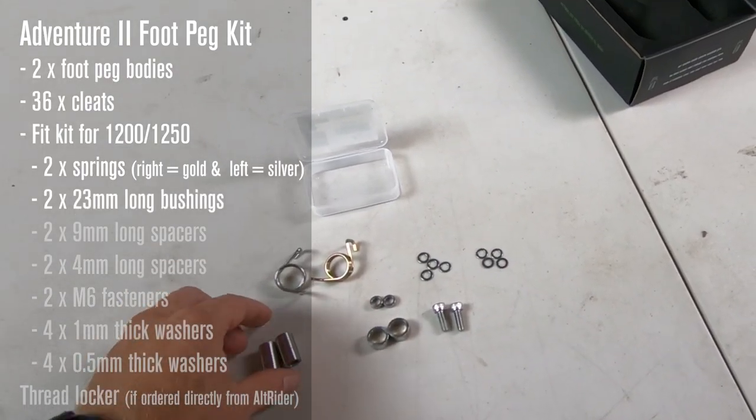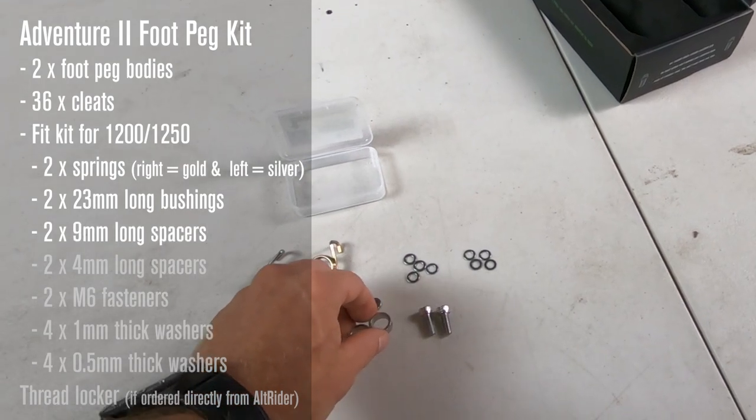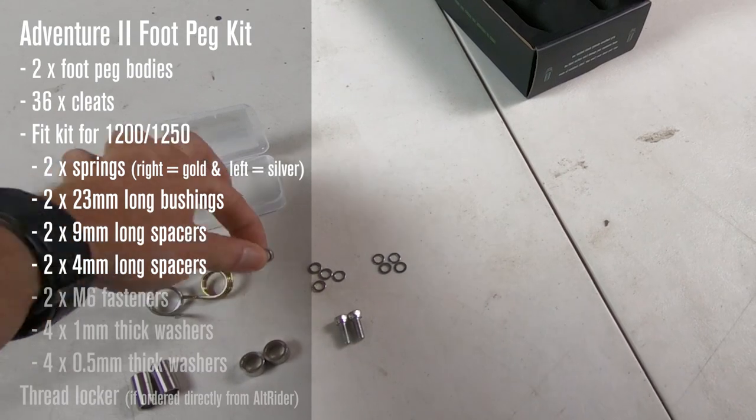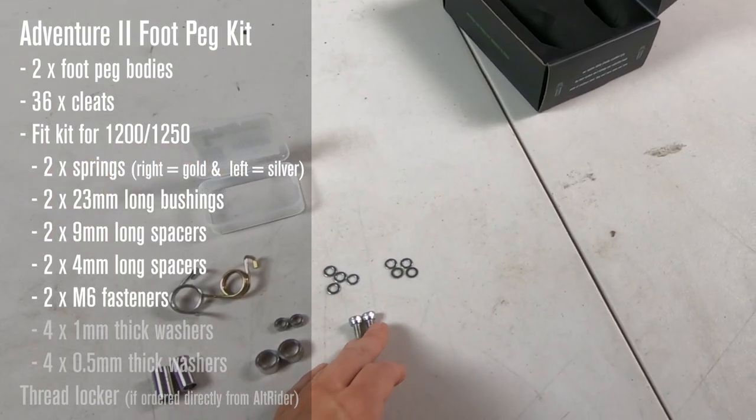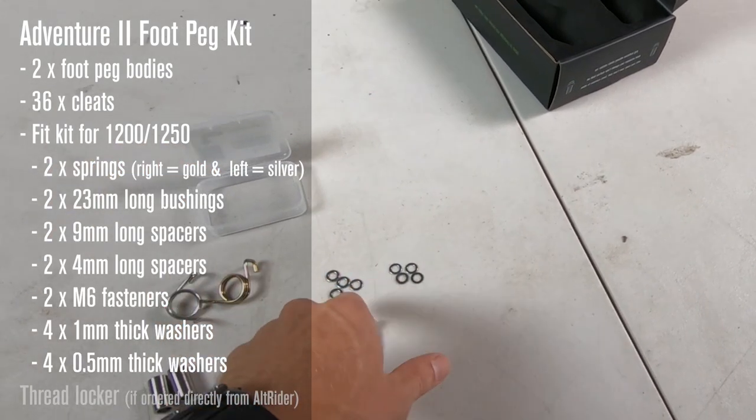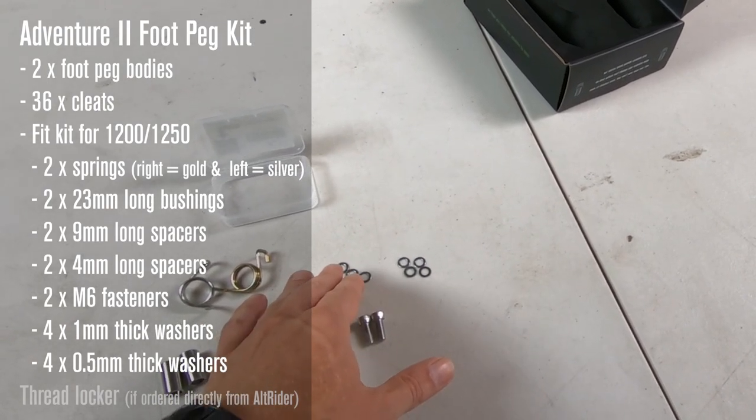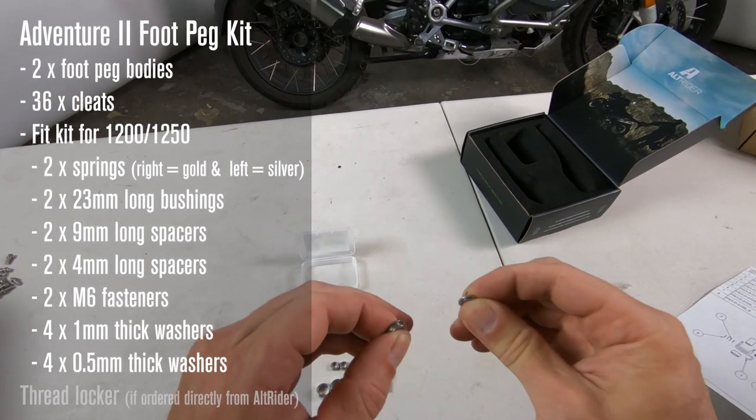Two 23-millimeter long bushings, two 9-millimeter long spacers, two small spacers that are 4 millimeters long, two M6 fasteners, eight M6 washers, four washers that are 1 millimeter thick, and four washers that are a half millimeter thick. These are for setting up the camber if desired.